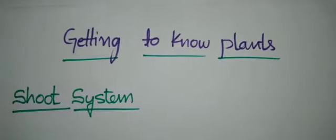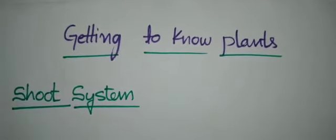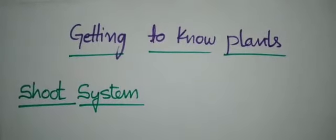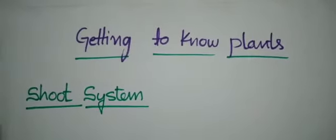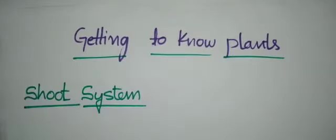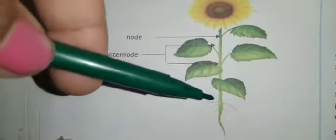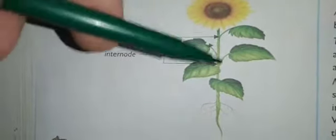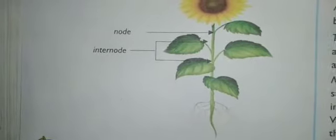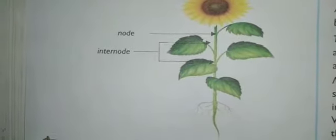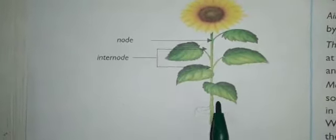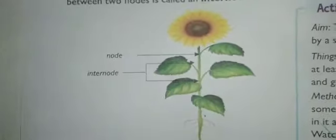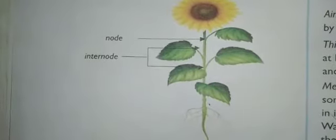So, what is the shoot system? The shoot system of a plant is made up of the parts that are present above the ground level. See here — this is the root system, and the parts which are present above the ground level are called the shoot system. The shoot system mainly comprises of the stem, leaves, flowers, and fruits.